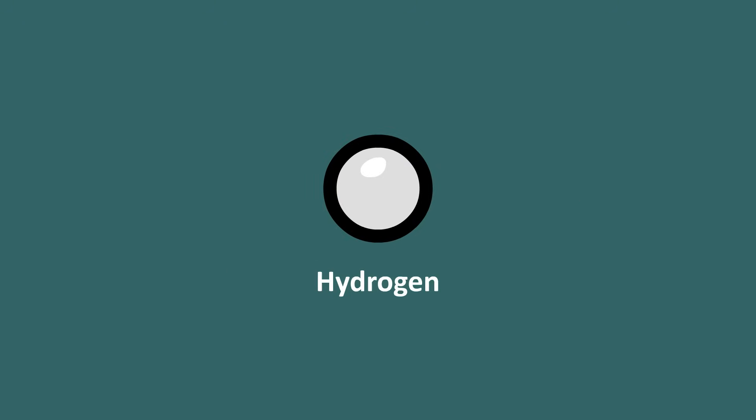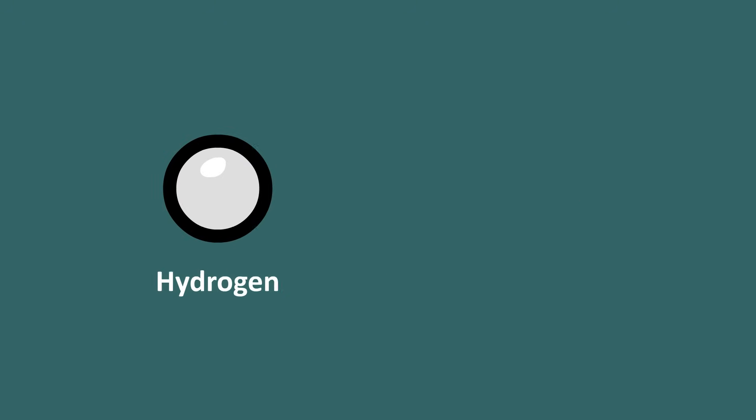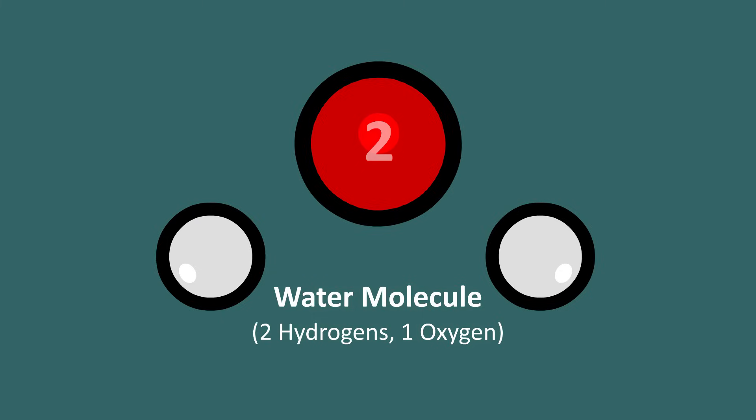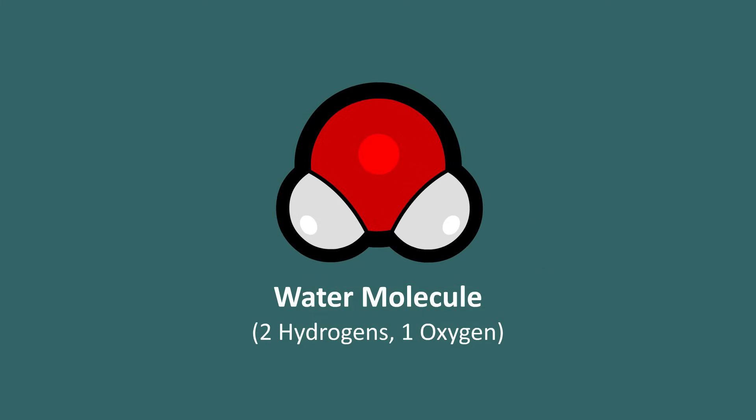For example, even though hydrogen can only form one bond, a standard water molecule is always made of three atoms. This is possible because oxygen, which can form two bonds, forms just one bond with each hydrogen atom.